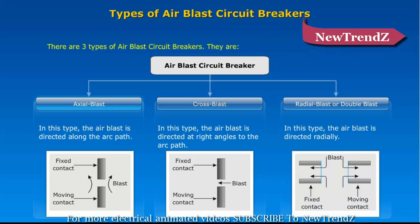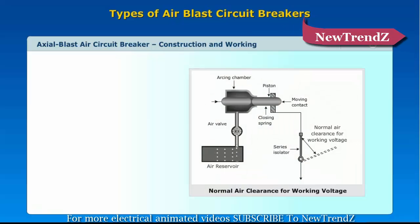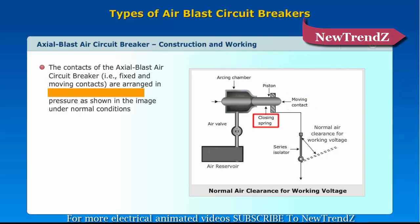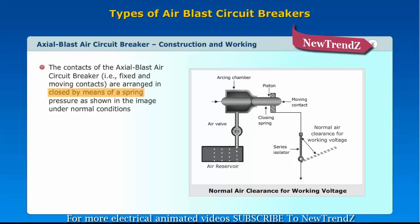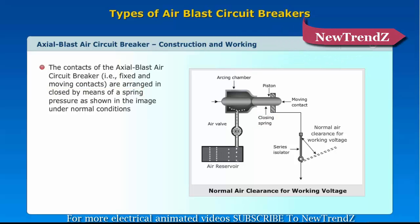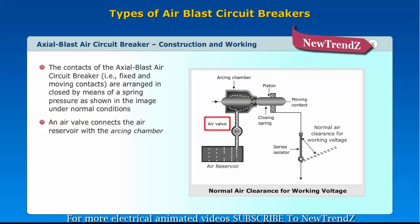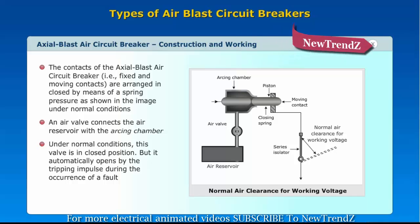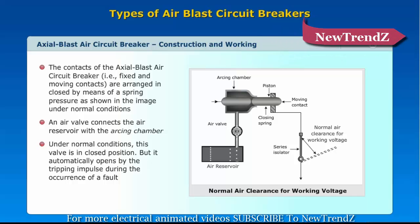In an axial blast circuit breaker, the fixed and moving contacts are arranged and held closed by means of spring pressure. An air valve connects the air reservoir with the arcing chamber. Under normal conditions, this valve is in the closed position, but it automatically opens by the tripping impulse during the occurrence of a fault.